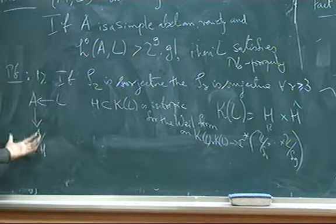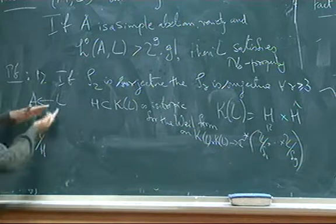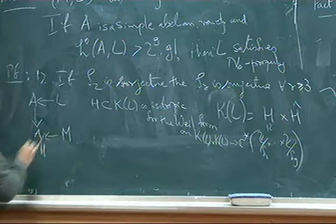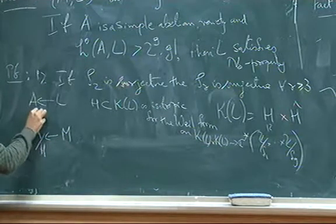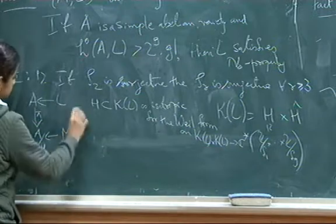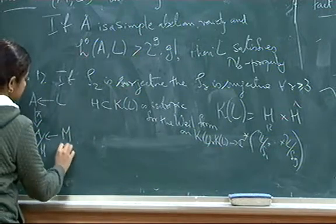In that case, actually you can look at its quotient. Then the line bundle L descends down on this quotient and if L is of any type, so then M is principally polarized.